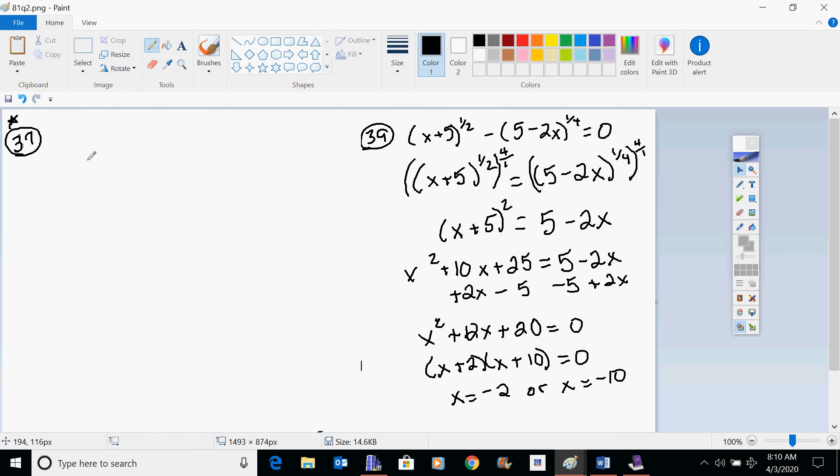And I'm going to do my check over here. So I'm going to try and see, first of all, if negative 2 plus 5 to the 1 half power minus 5 minus 2 times negative 2 to the 1 fourth power gives me this 0. So this is really 3 to the 1 half power. This is really 9 to the 1 fourth power. All right, well, that's an interesting thing to think about. But if you can really think about it, this is 3 to the 1 half. 9 is 3 squared.